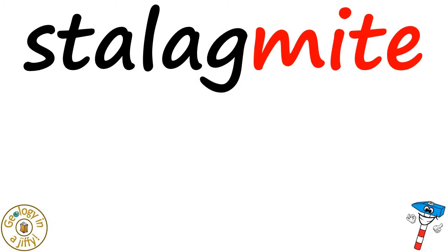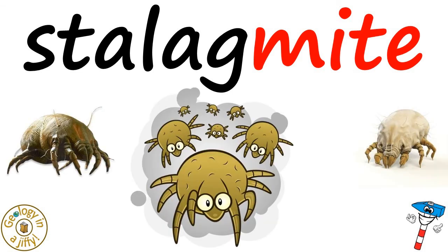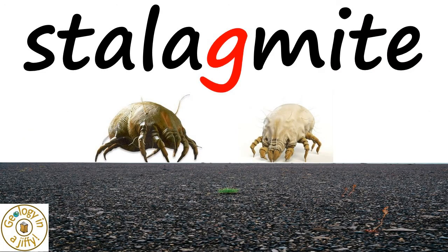The word stalagmite has the word mite in it. A mite is a tiny spider that scurries across the ground. So it also helps us remember that stalagmites form on the ground surface.